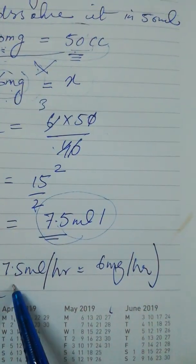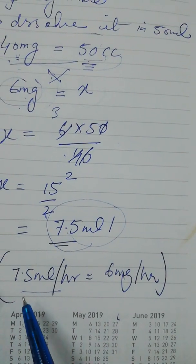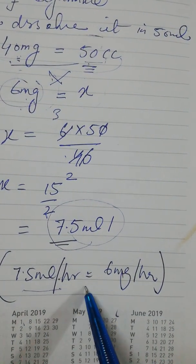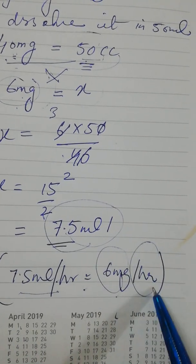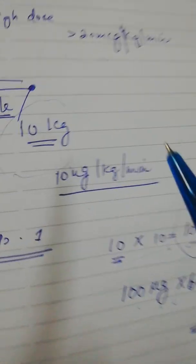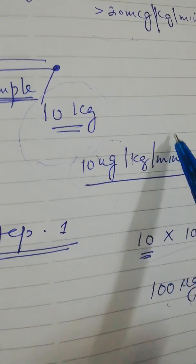If we set the rate on the infusion pump at 7.5 ml per hour, it will deliver 6 mg per hour or we can also say it will deliver 10 microgram per kg per minute. That's it.